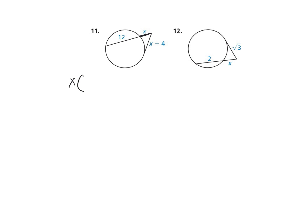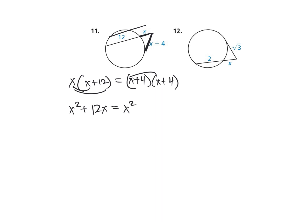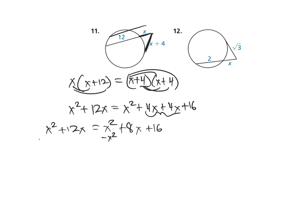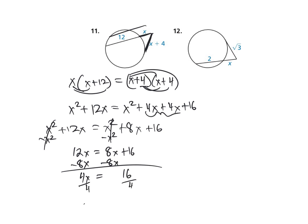Number 11: the part times the whole piece X plus 12 equals the part X plus 4 times the whole X plus 4. Distribute the left side: X squared plus 12X. FOIL the right side: X squared plus 4X plus 4X plus 16, which is X squared plus 8X plus 16. Subtract X squared from both sides: 12X equals 8X plus 16. Subtract 8X: 4X equals 16. Divide by 4, X equals 4.